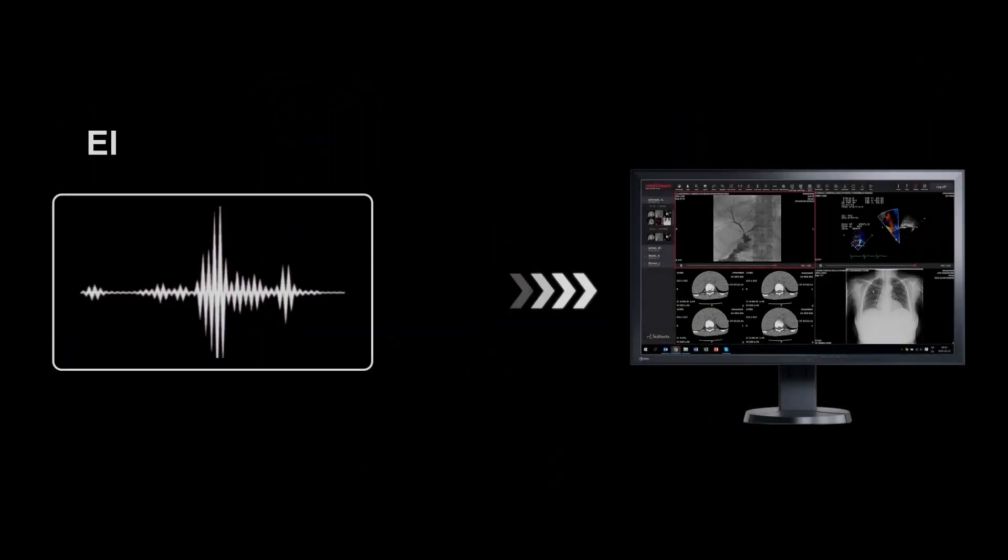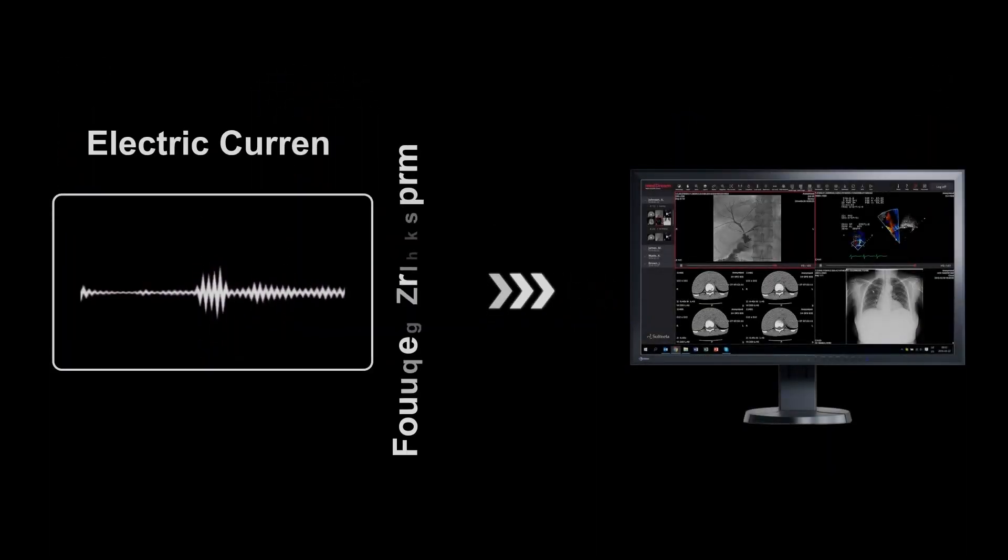To measure this emitted energy, a radio frequency receiver is placed inside the body of the MRI and detects the released energy as an electrical current.